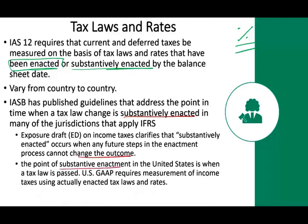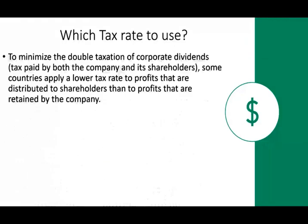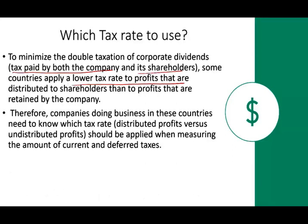In the US, the point of substantive enactment is when the tax law is passed by Congress. US GAAP requires measurement using actually enacted tax law and rate. To minimize double taxation of corporate dividends — taxes paid first by the company, then by shareholders — some countries apply a lower tax rate to profits distributed to shareholders than to profits that are retained. So in those countries, you have two different tax rates: one if you keep the profit, and a different one if you distribute it.